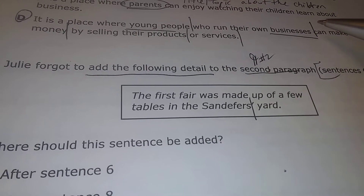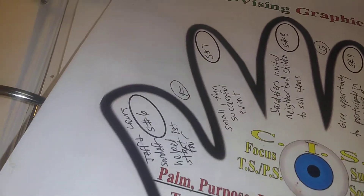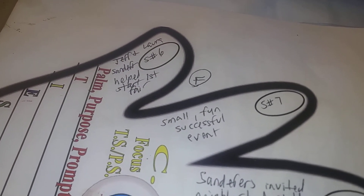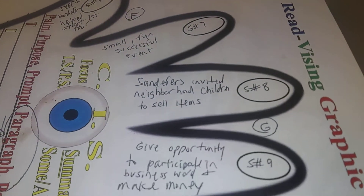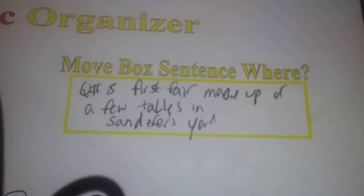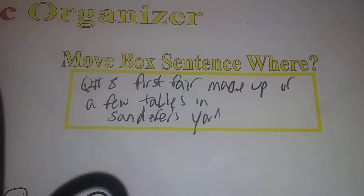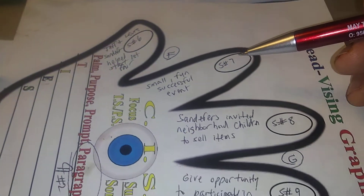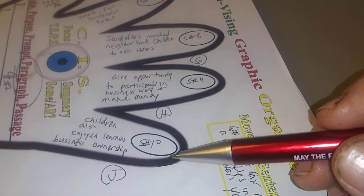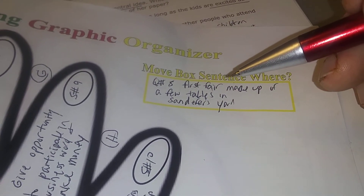Since we need to add it, the best thing to do is use our fingers. Our hand has five fingers, so we're going to label each fingernail sentences six, seven, eight, nine, and ten. The answer choices ask: do you want to place the sentence — 'The first fair was made up of just a few tables in the Sandifers' yard' — after sentence six (F), after sentence eight (G), after sentence nine (H), or after sentence ten (J)?